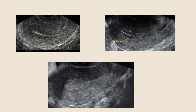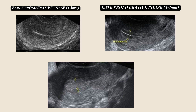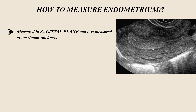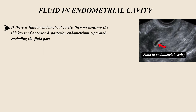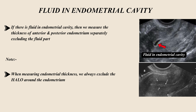Endometrial thickness is 1 to 3 mm in the early proliferative cycle, 4 to 7 mm in the late proliferative cycle, and 8 to 15 mm in the secretory phase. The endometrium is always measured in the sagittal plane at the maximum thickness. If there is fluid in the endometrial cavity, we measure the thickness of the anterior and posterior endometrium separately, excluding the fluid. We always exclude the halo around the endometrium when measuring endometrial thickness.